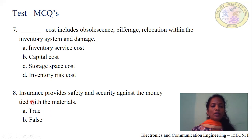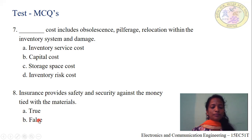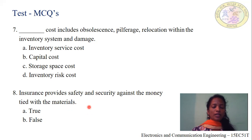Question number 8: Insurance provides safety and security against the money tied with the materials. Is this statement true or false? Option A: true. Option B: false. Insurance, as we learned, is a system to provide safety and security against the money tied with the materials. Hence, option A, true, is correct.